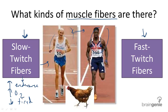Fast twitch fibers, on the other hand, are actually useful for more powerful bursts of energy and short movements, such as sprinting. These muscle cells will tire easily, but they provide a great deal of power.